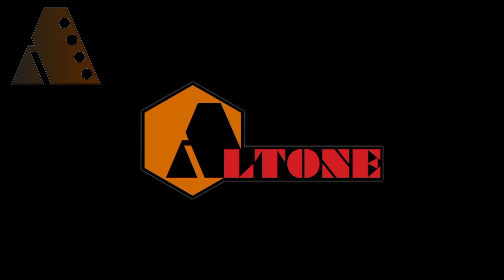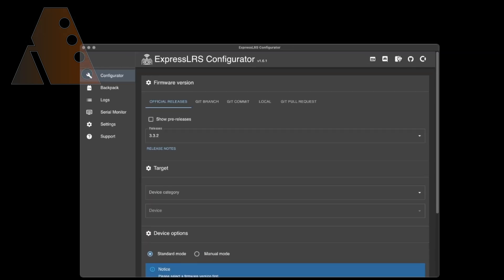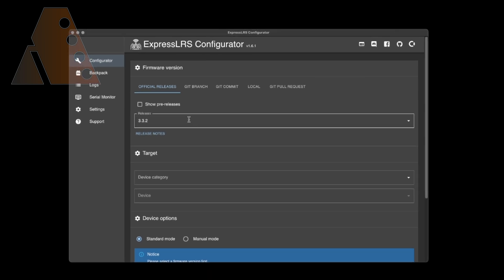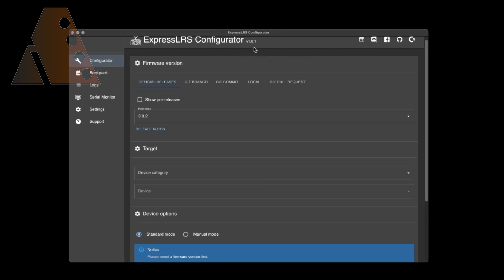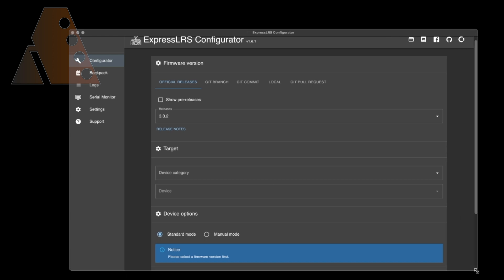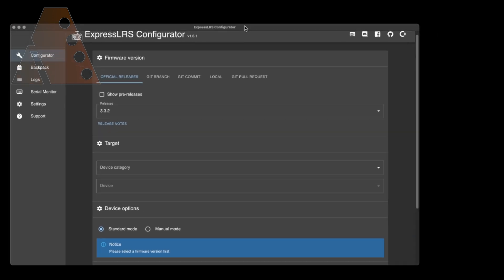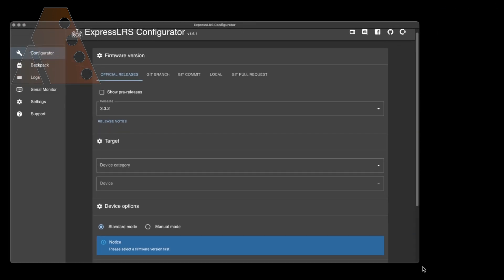Let's go ahead and open up the ExpressLRS configurator. I have the latest version of the configurator here, which is 3.1.6.1, and then the most recent release is 3.3.2. You see that in one of my previous videos, I actually shared how to install the configurator. So if you go over and check out some of my other videos, you'll see how to install this configurator.